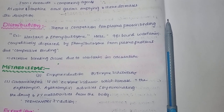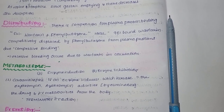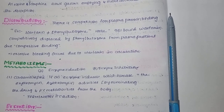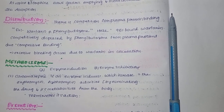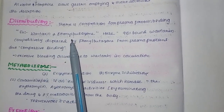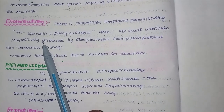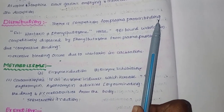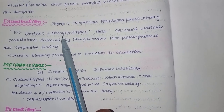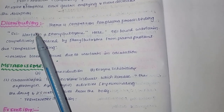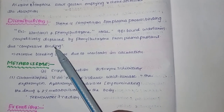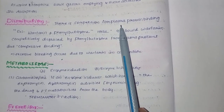Regarding distribution interactions, consider competitive versus non-competitive binding. For example, warfarin and phenylbutazone — warfarin has 95% plasma protein binding. Phenylbutazone also has very high plasma protein binding at around 95%.